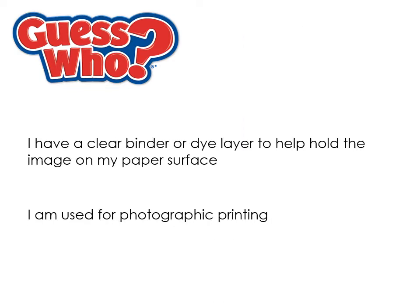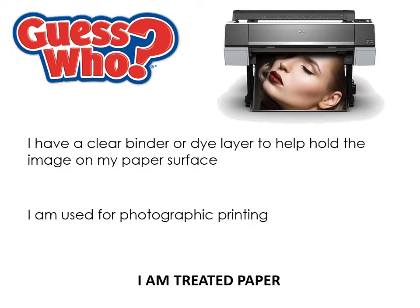Treated paper has a clear binder or dye layer to help hold the image on the paper surface, and it's used for photographic printing — essentially the photo paper you'd buy for inkjet printers. It has a special treated layer, almost like sublimation paper with a shiny side and a dull side, where you need to print on the correct side.